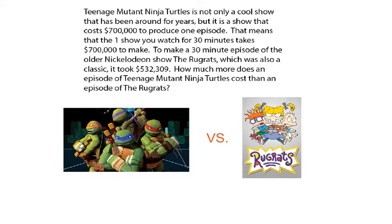We're going to look at one more example of subtracting across zeros. Teenage Mutant Ninja Turtles is not only a cool show that's been around for years, but it's a show that costs $700,000 to produce just one episode — not five episodes, just one. That's a lot of money. To make a 30-minute episode of an older Nickelodeon show, The Rugrats — this is one that I grew up watching — it actually costs $532,309 to create. That's still a lot of money. How much more does an episode of the Teenage Mutant Ninja Turtles cost than an episode of the Rugrats?